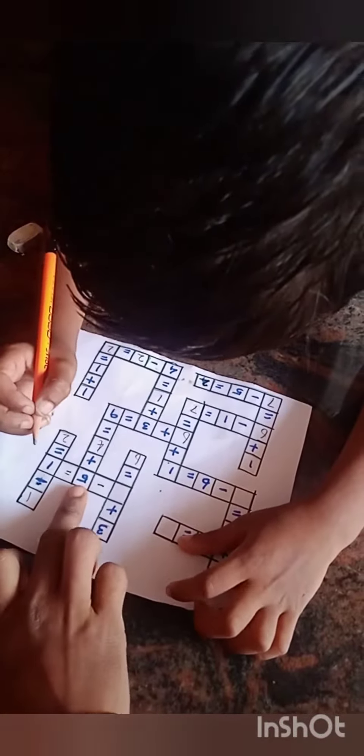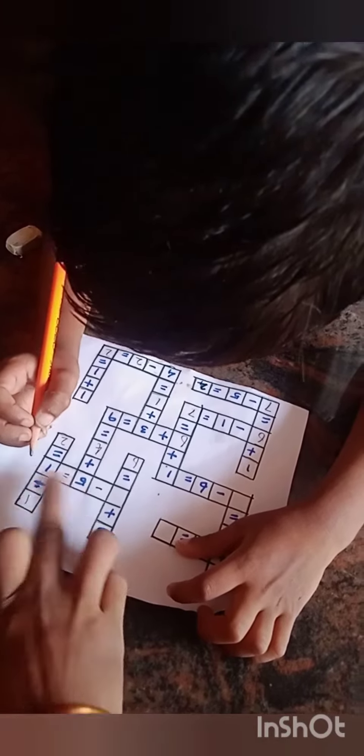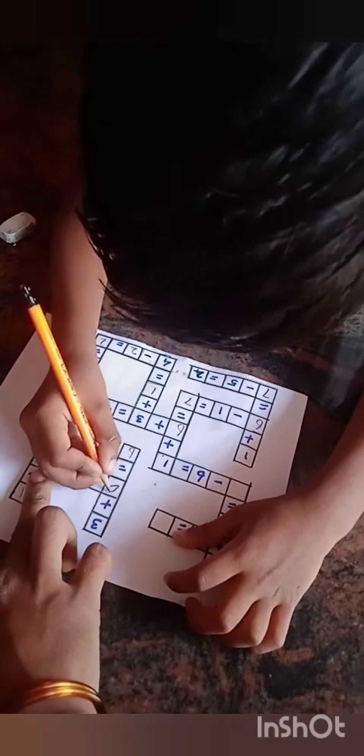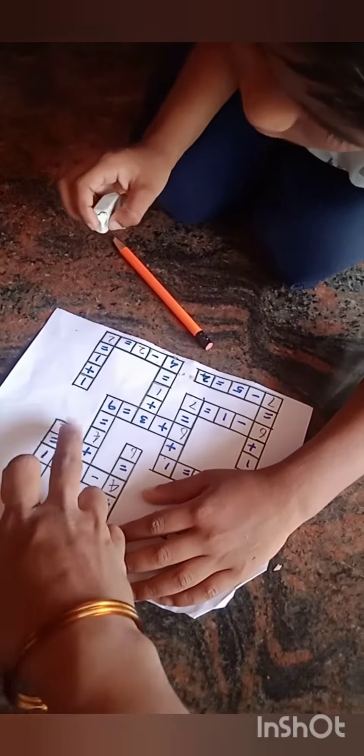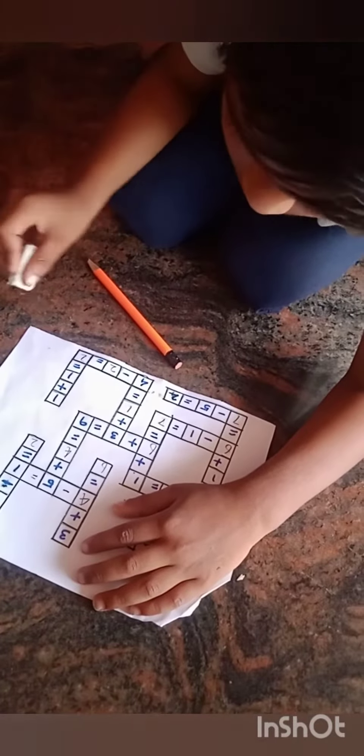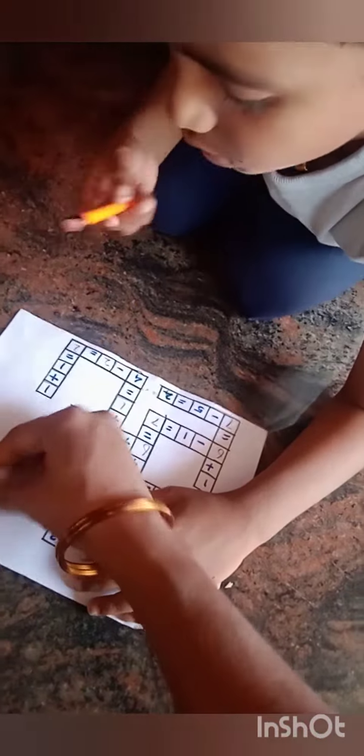What do you do? 5 equals 1. 1 equals minus 1. Sorry. 5 minus 1 is 4. 1 minus 1 is 0. 1 is 1.